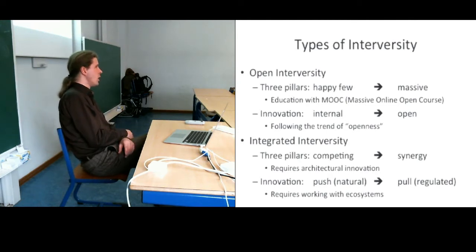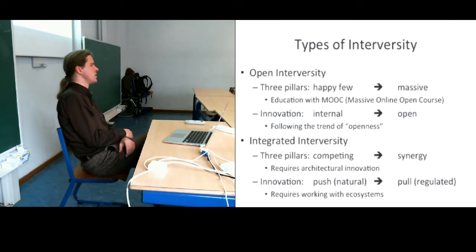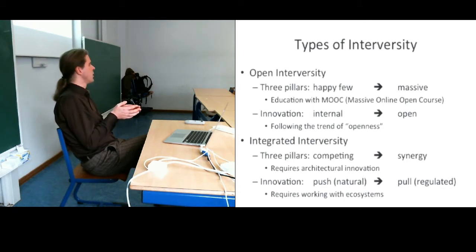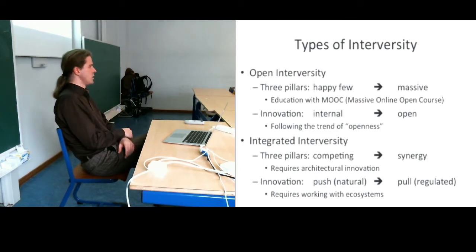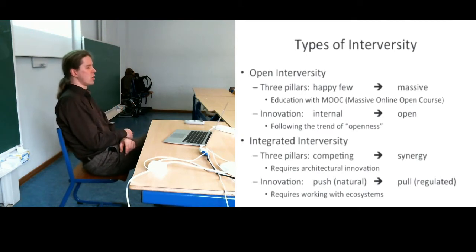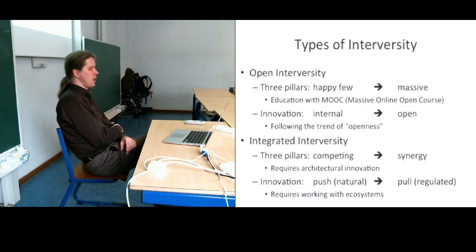What is architectural innovation? Consider how a caterpillar transforms into a butterfly. The caterpillar cocoons itself, and internally the resources stay the same, but all the connections change — and what comes out is something totally different. That's a clear architectural innovation. It also exists with organizations that have to reinvent themselves. I'm going to argue about how universities can do an architectural innovation and transform the competitive situation of the three pillars into a synergetic relation.